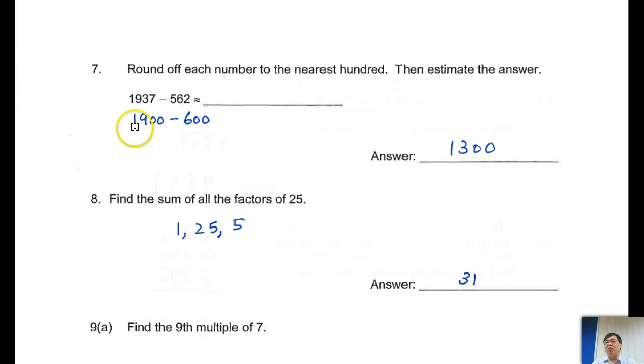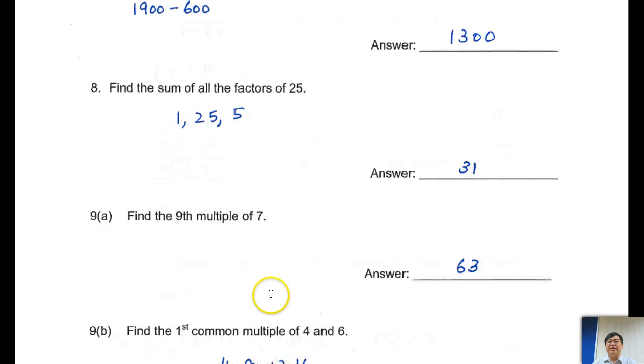Next, you come up to this. Round off each number to the nearest hundred. Then, estimate the answer. Now, for these cases, you must round them off into a group. From 1,937, nearest is 1,900. And for this minus, this one rounded off is to 600. So, 1,900 minus 600 is 1,300. Hope you understand that. Next, find the sums of all factors of 25. 1 times 25 is 25. 5 times 5 is 25. There's no any other number that multiply together to get the product 25.